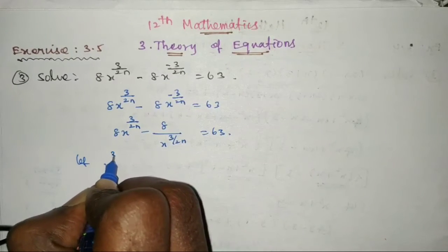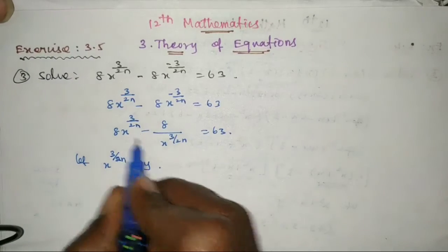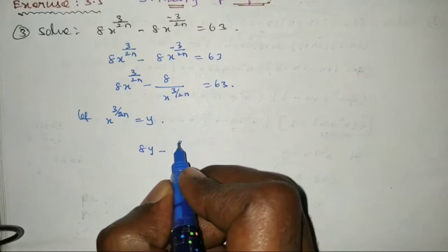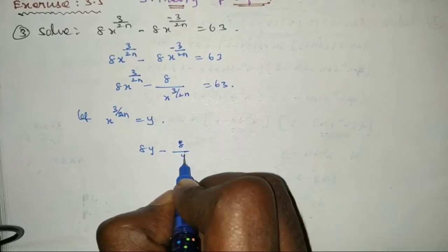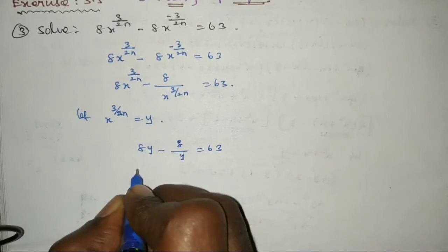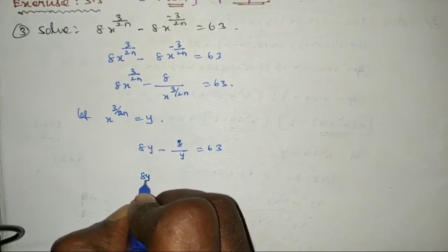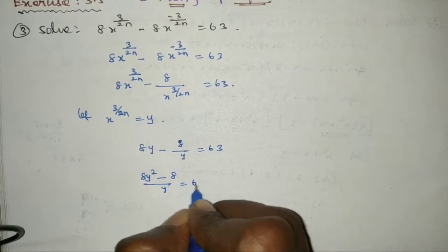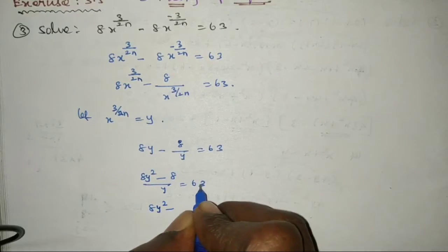So let y equal x^(3/2n). Then 8y minus 8 times x^(-3/2n) equal to 63. Rewriting x^(-3/2n) as 1/y, we get 8y minus 8/y equal to 63. Cross-multiplying gives 8y squared minus 63y minus 8 equal to 0.